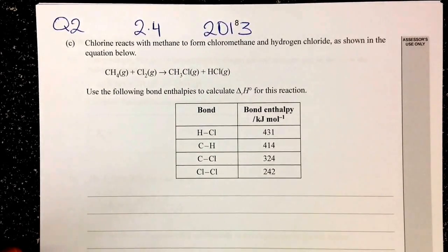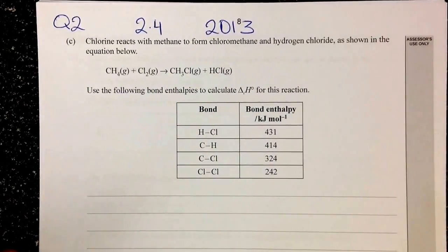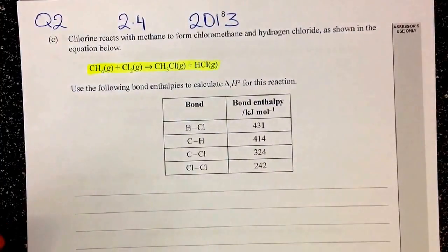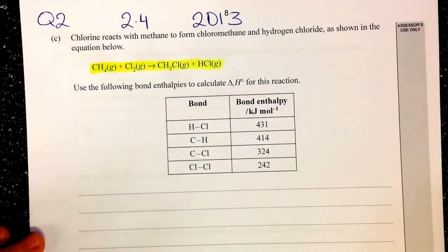The question here says chlorine reacts with methane to form chloromethane and hydrogen chloride as shown in this equation. Use the following bond enthalpies to calculate delta H for this reaction.